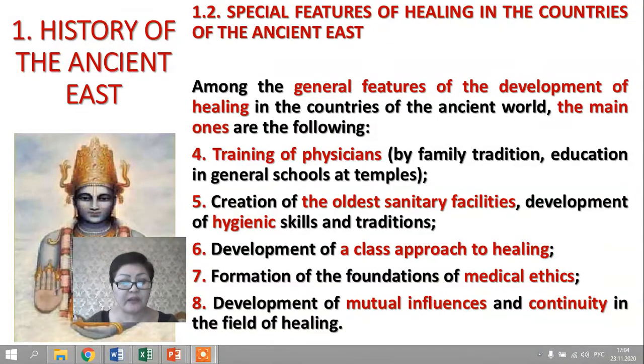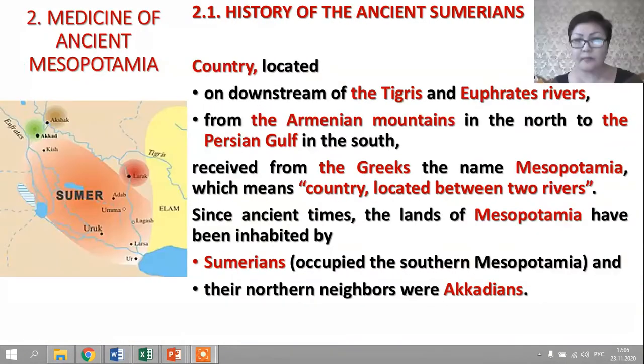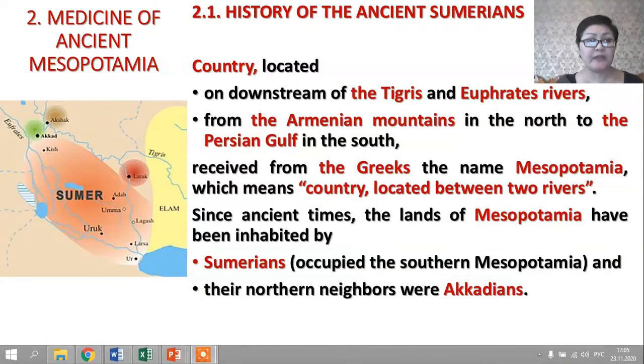Fourth, the training of physicians held by family tradition and education in general schools at temples. Fifth, creation of the oldest sanitary facilities and development of hygienic skills and traditions. Sixth, development of a class approach to healing. Seventh, formation of the foundations of medical ethics. And last, development of mutual influences in the field of healing.